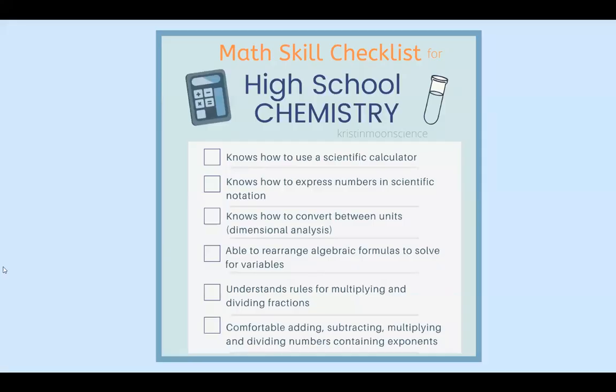So here is a checklist that I have made to help you gauge whether or not your student might benefit from this six week summer session. These are the skills your student is going to have to use in their full year chemistry class. They need to know how to use a scientific calculator. They need to understand how to express numbers in scientific notation. They need to know how to do unit conversion, converting between one unit and another. This is also sometimes called dimensional analysis.